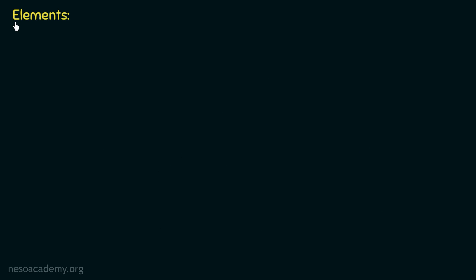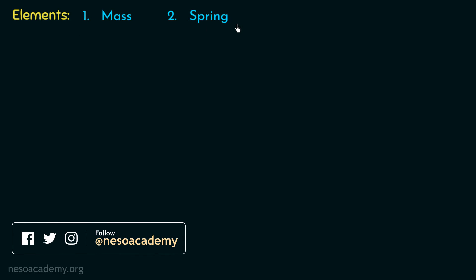From the previous lecture, we know that there are three elements which are present in a translational mechanical system. The first one is mass, the second one is spring, and the third one is friction. We will now define the force equations in these three elements.